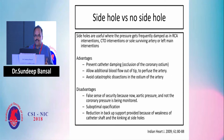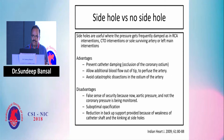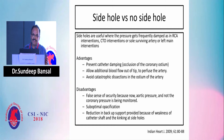Catheters with side holes prevent damping and allow additional blood flow into the coronary artery while changing equipment, keeping the patient relatively free of angina. However, this is a false sense of security because you are measuring aortic root pressure, not coronary perfusion pressure. Nonetheless, in cases with damping, side holes provide some comfort and help perfuse the coronary while changing wires.